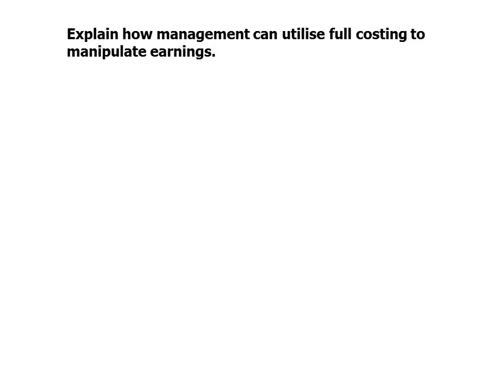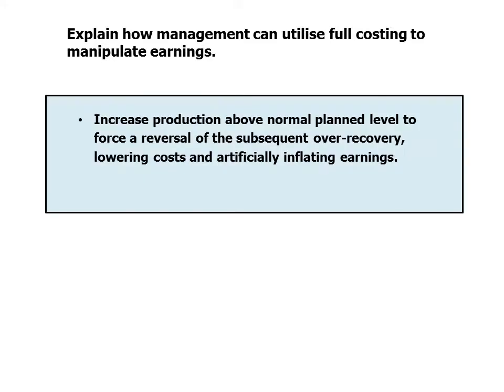Explain how management can utilise full costing to manipulate earnings. If we assume that management wants to inflate earnings, what they can do is increase production above the normal planned level. This will force a reversal of the subsequent over-recovery, which will lower reported costs and artificially inflate earnings.